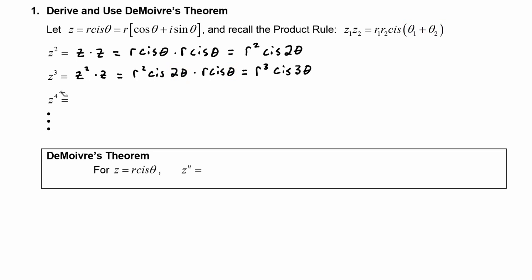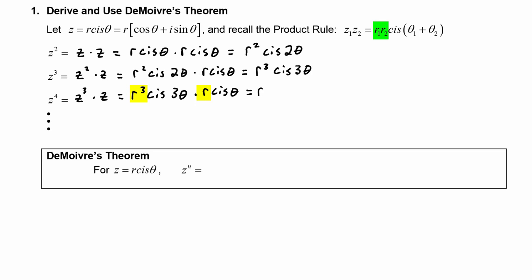We can do the same thing for z to the fourth, written as z to the third times z. So we have r cubed cis three theta times r cis theta. The product rule says to multiply the radii: r cubed times r is r to the fourth. Then cis of the sum of the two angles: three theta plus theta is four theta.